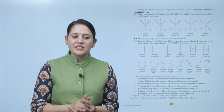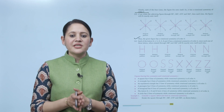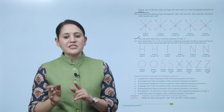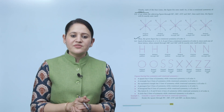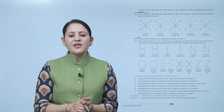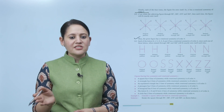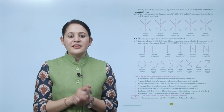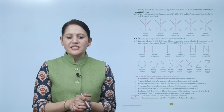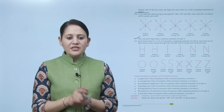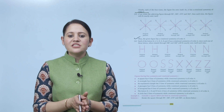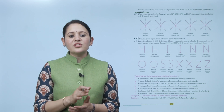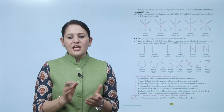Now, figures having both line symmetry and rotational symmetry: A square has 4 lines of symmetry and rotational symmetry of order 4. A rectangle has 2 lines of symmetry and rotational symmetry of order 2. An equilateral triangle has 3 lines of symmetry and rotational symmetry of order 3. A pentagon has 5 lines of symmetry and rotational symmetry of order 5. A hexagon has 6 lines of symmetry and rotational symmetry of order 6. The letters H, I, O, X have two lines of symmetry and rotational symmetry of order 2. A circle has infinite lines of symmetry and rotational symmetry of infinite order.